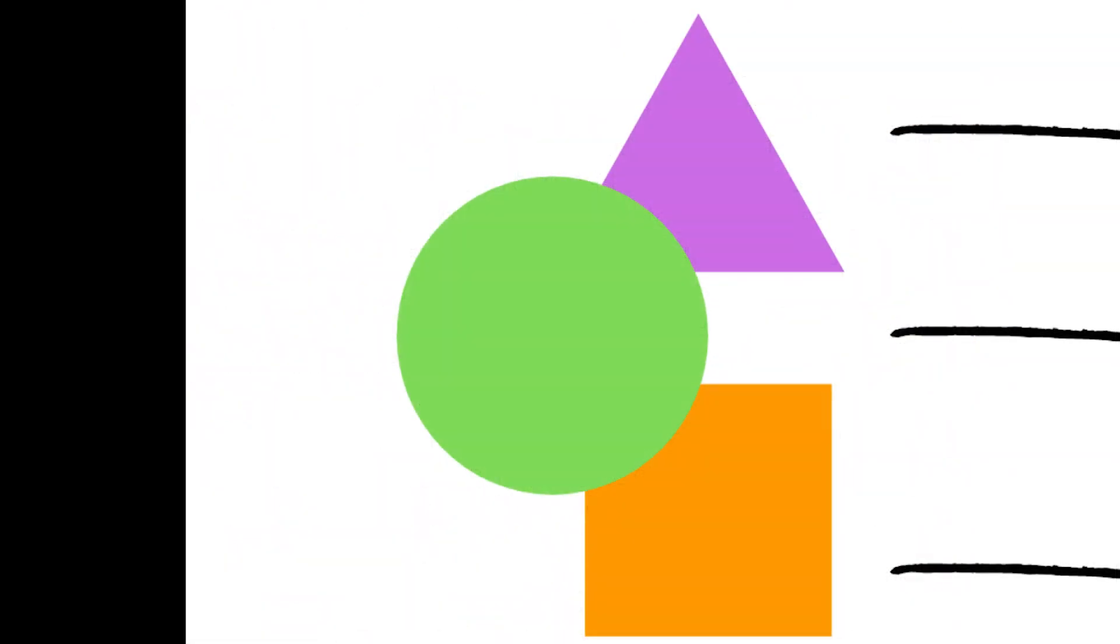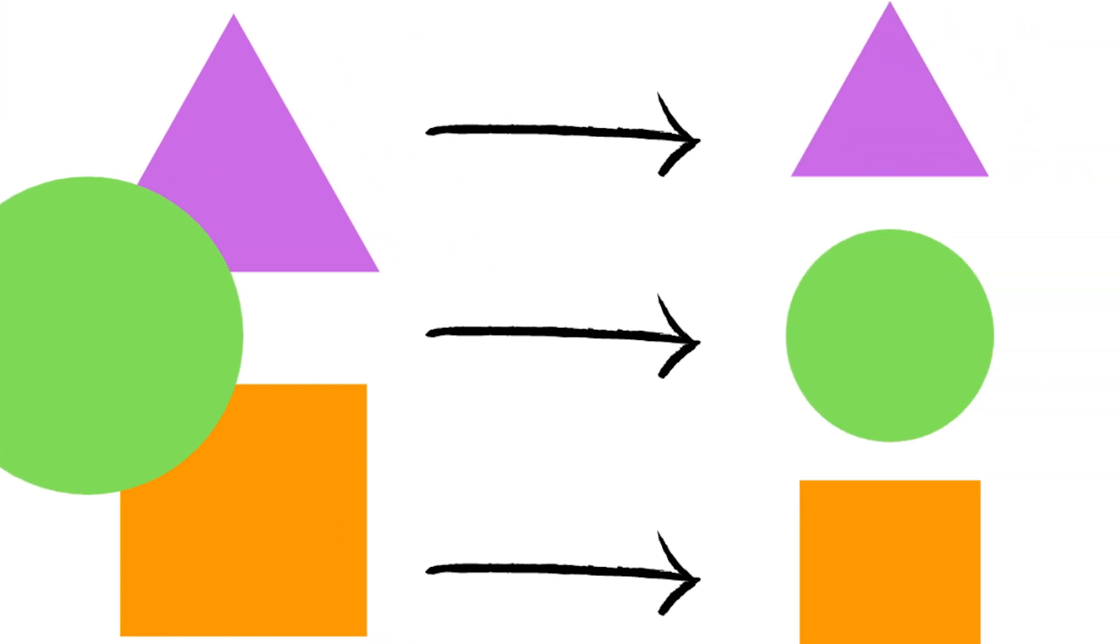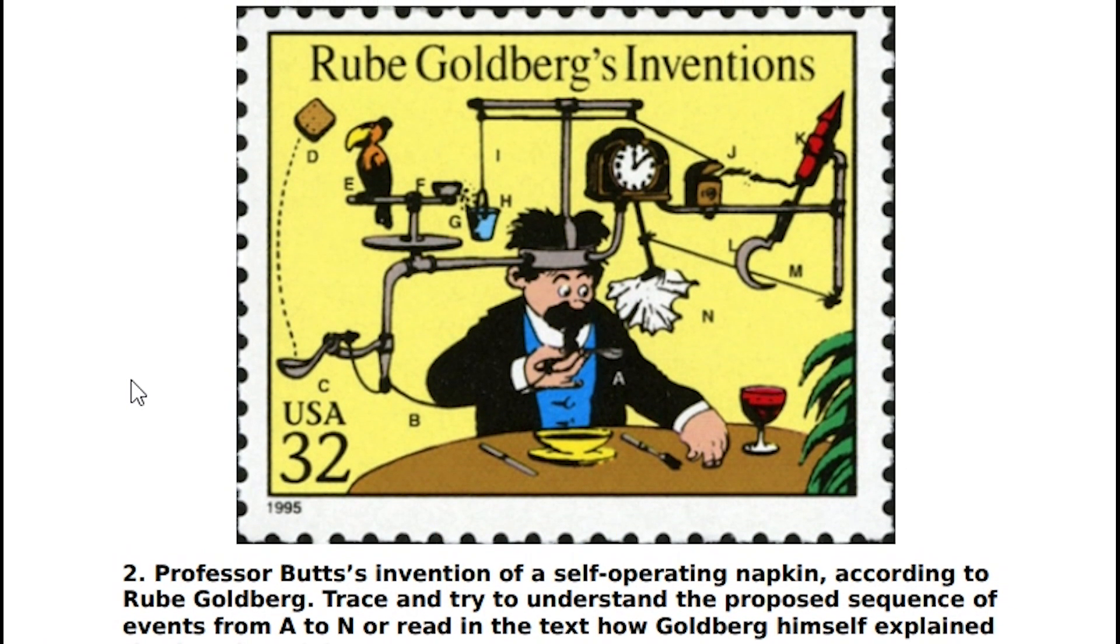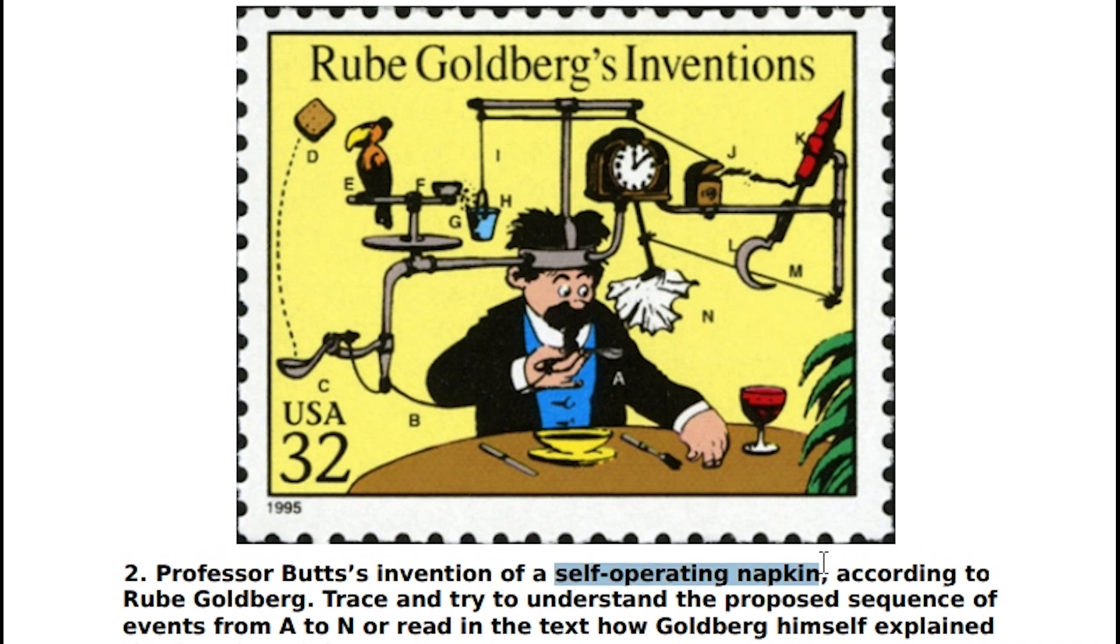Some things can look complicated, but they're actually quite simple. That is, our brains can understand it. For example, this Rube Goldberg example looks complex, but if we just follow the linear series of events, we see that the movement of the man's hand causes the napkin to be lifted. Handy, right?